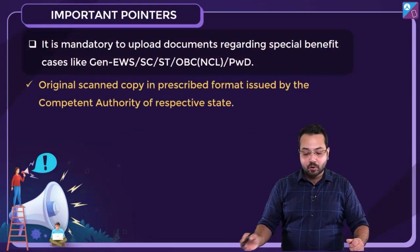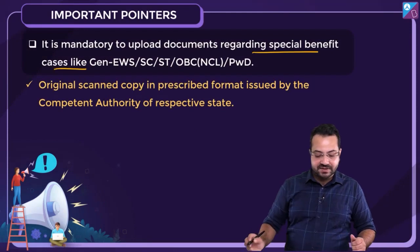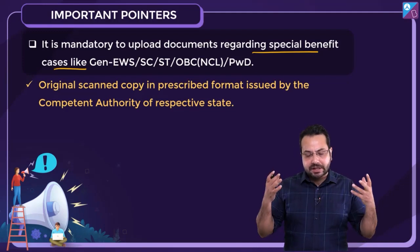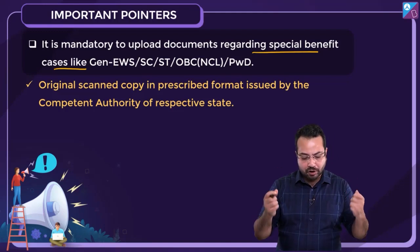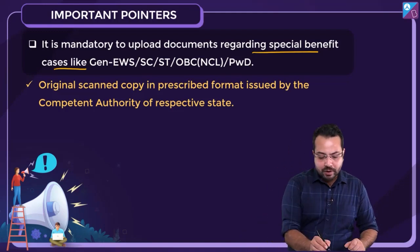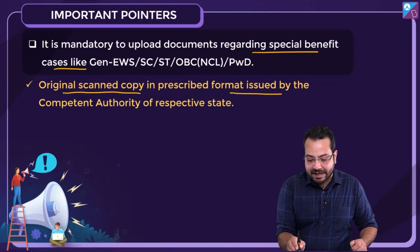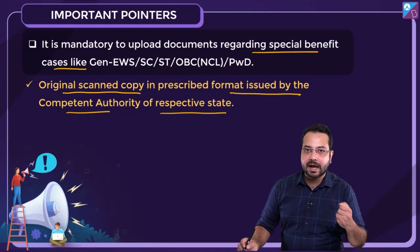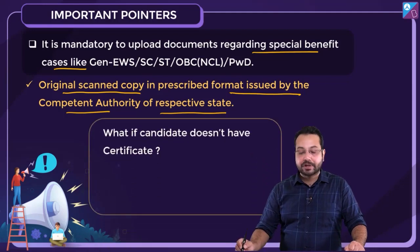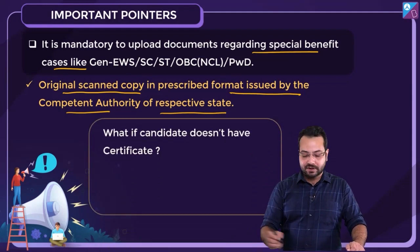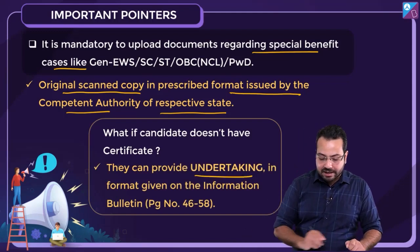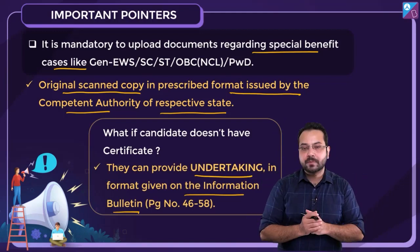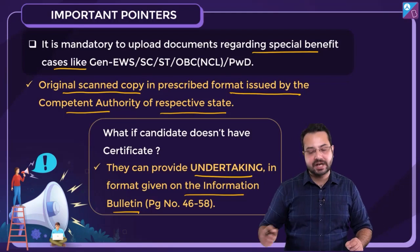It is mandatory to upload documents regarding special benefit cases like general category, SC/ST, and OBC category. If you fall into this category and want to use that to your advantage, you need to have your certificates — original scanned copies in the prescribed format issued by the competent authority of your respective state. In case you do not have the certificate, you can provide an undertaking in the format given on the information bulletin. The link to the information bulletin is in the description box.